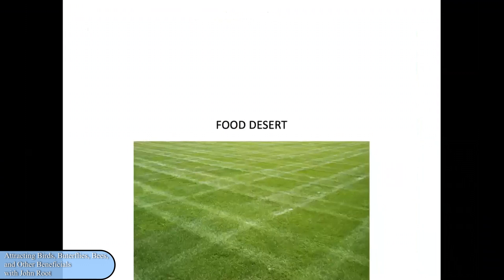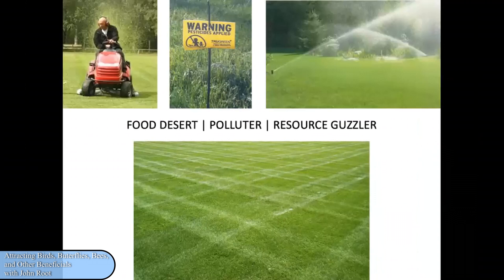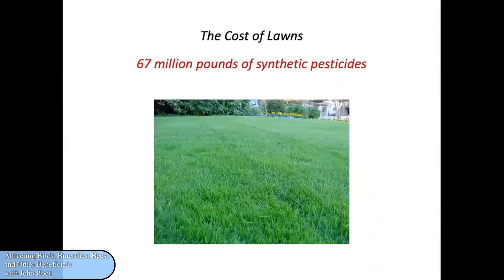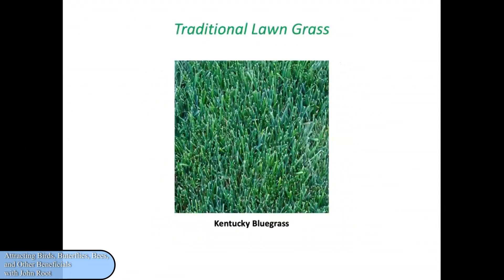But we pay an unconscionable price for this kind of landscaping standard, because it's a food desert for wildlife and also a polluter and resource guzzler. Far more synthetic pesticides are used on our lawns per acre than on agricultural land. We use an incredible amount of water to keep this grass alive through the summer. Our lawns are really on life support because we're using primarily this non-native bluegrass — it's not actually from Kentucky, it's from Eurasia. It's fine for Britain where there are damp summers, but we end up having to water and feed it and everything else.